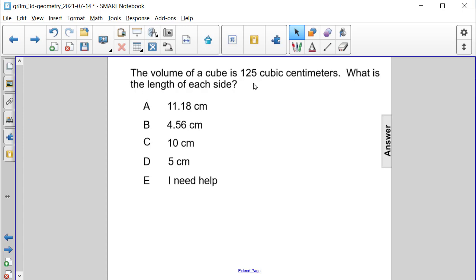The volume of a cube is 125 cubic centimeters. What is the length of each side?